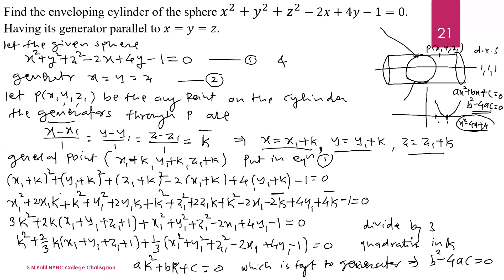We substitute x = x₁ + k, y = y₁ + k, z = z₁ + k into equation 1 and expand: (x₁ + k)² = x₁² + 2x₁k + k²; similarly for y₁ and z₁. Then −2(x₁ + k) gives −2x₁ − 2k, and +4(y₁ + k) gives 4y₁ + 4k. We now arrange this expression as a quadratic in k.